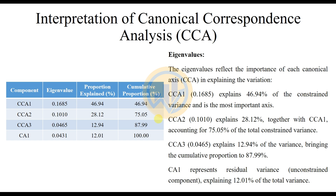The table presents the canonical correspondence analysis components. There are a total of four components: CCA1, CCA2, CCA3, and CA1. The next columns show the eigenvalues and the proportion explained and cumulative proportions. The eigenvalues reflect the importance of each canonical axis in explaining the variation.